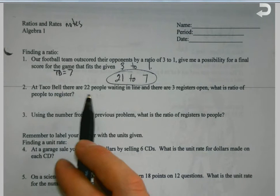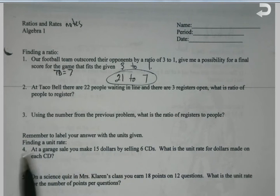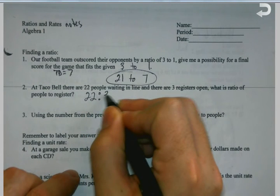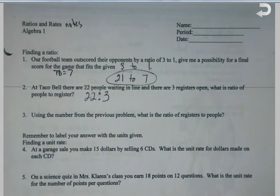At Taco Bell, 22 people waiting in line, there are 3 registers open. What's the ratio of people to registers? That's all I'm doing with this. I'm finding a way, and what this is going to allow me to do when we get to the next part tomorrow is figure out specific numbers. If there's 150 people waiting, how many registers would I need? But today we're just setting up these ratios.